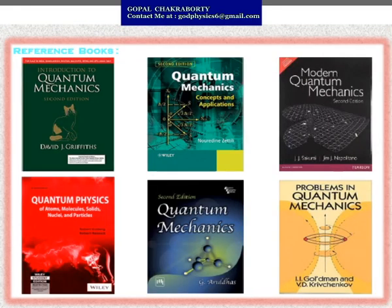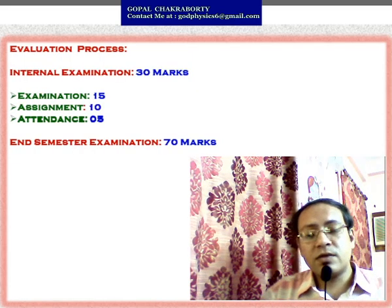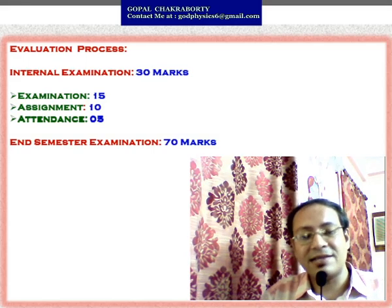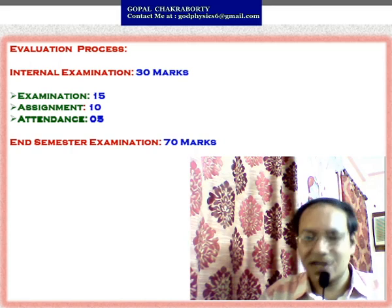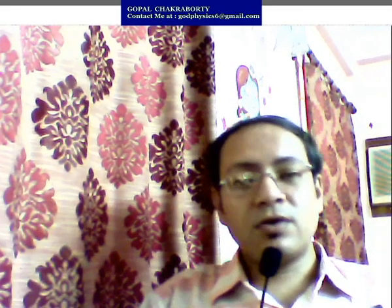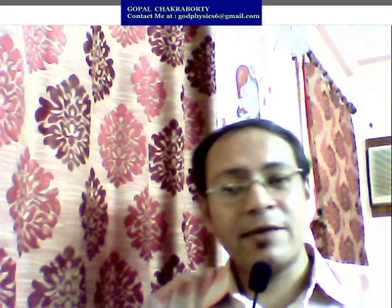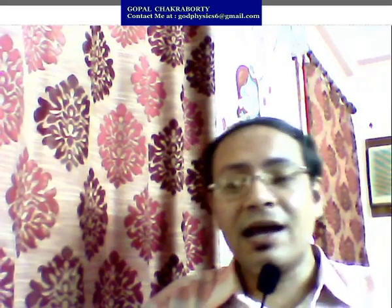These are the important books you can refer. The evaluation process: you have to appear for the external semester exam of 70 marks and internal exam for 30 marks. All of you have understood and enjoyed today's class. Please go through this class once again in detail because in the next class I will explain the normalization condition, normalization factor, orthogonal factor, orthogonal condition, expectation value, and we will also solve some numericals on those topics. Thank you for attending today's class. Thanks again.